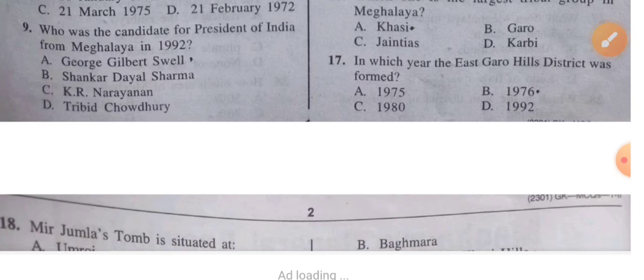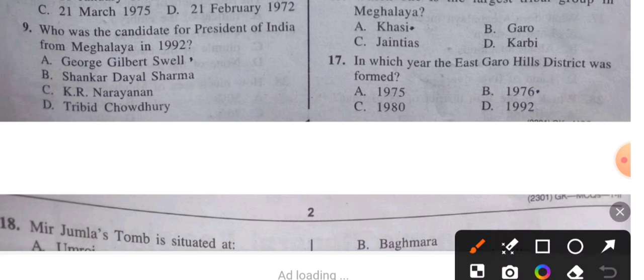Question 17: In which year was the East Garo Hills district formed? The answer is 1976.